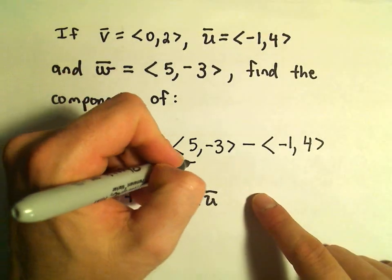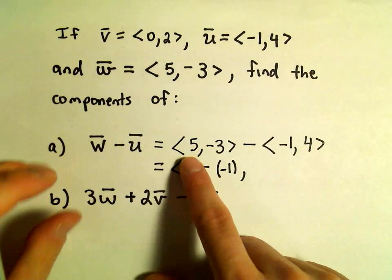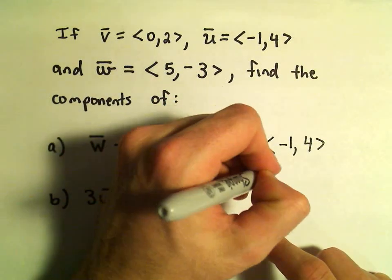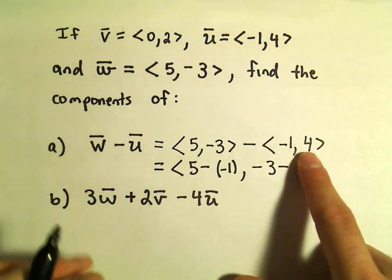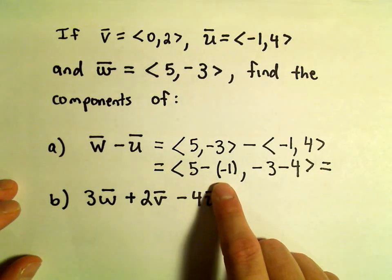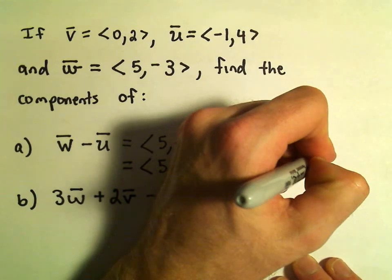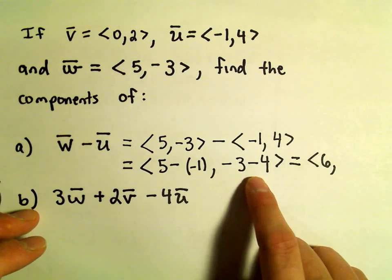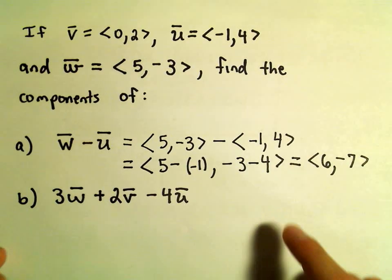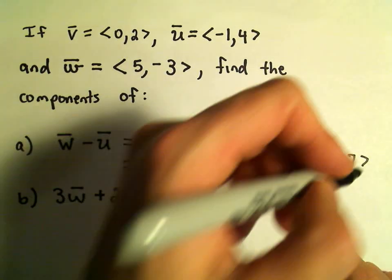All we do is we take 5 minus negative 1. So I'm just subtracting the first components. And then we'll take negative 3 minus 4. After we simplify, we'll get 5 minus negative 1, that's 5 plus 1. So we'll get our first component to be 6. Negative 3 minus 4 will give us negative 7. So those would be the components of the vector W minus U.